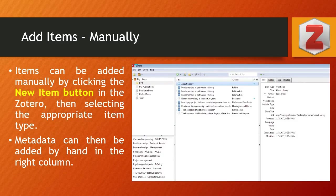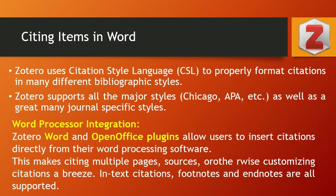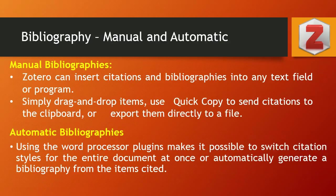As mentioned, we can also add items manually — we will discuss all these in detail in the next video. We can cite items in Word with the help of citation style language. Jotero supports all major citation styles popular throughout the world, like Chicago, APA, and many more, as well as any specific journal citation style. The Jotero Word and OpenOffice plugin allows users to insert citations directly from their word processing software and also helps to create bibliographies for all citations used in the paper. Both manual and automatic bibliographies can be prepared with Jotero.